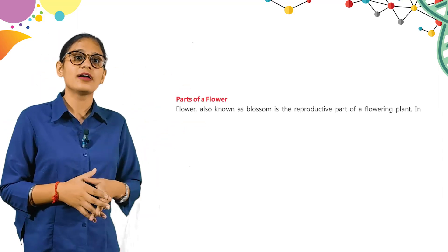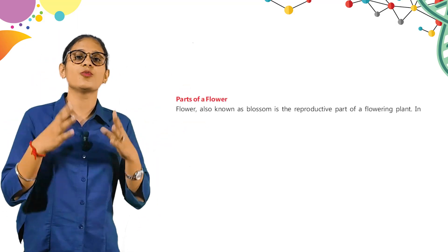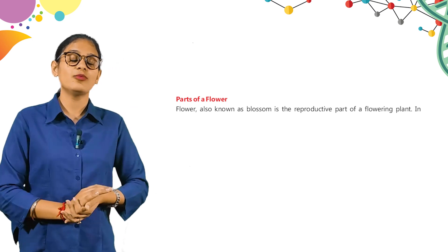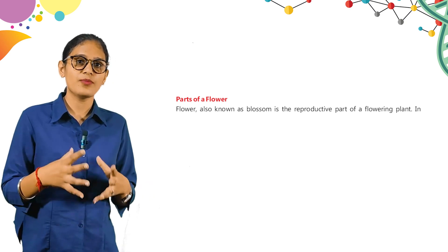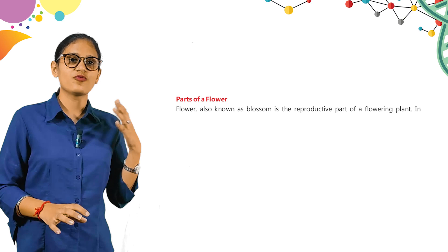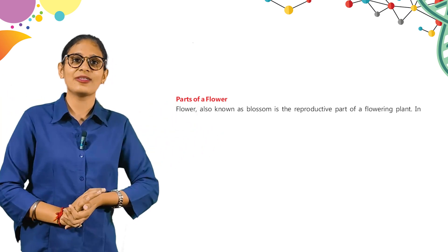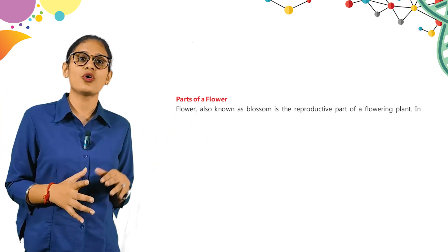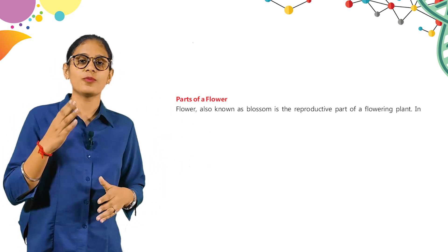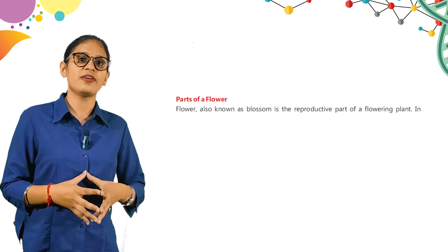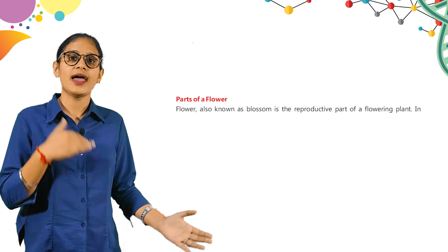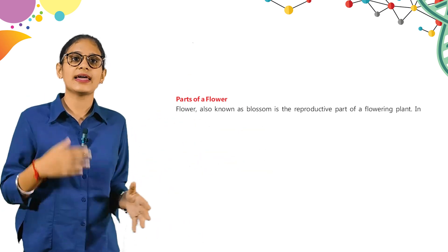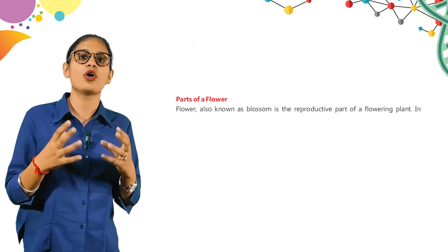Here are the parts of a flower. A flower, also known as a blossom, is the reproductive part of a flowering plant. In addition to being vibrantly colored, producing nectar and sweet fragrance, and thus attracting many insects and birds, flowers play an important role in plant reproduction. A typical flower may be divided into four distinct whorls: Calyx, Corolla, Androecium, and Gynoecium.